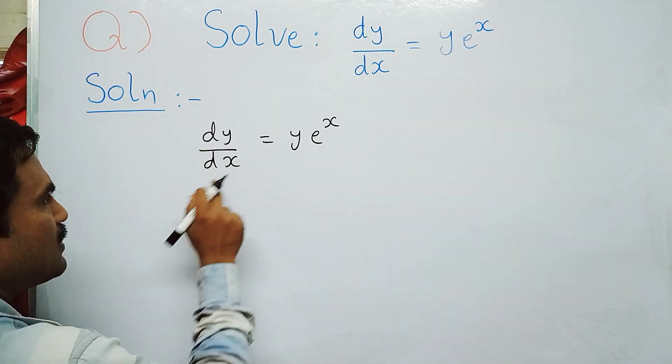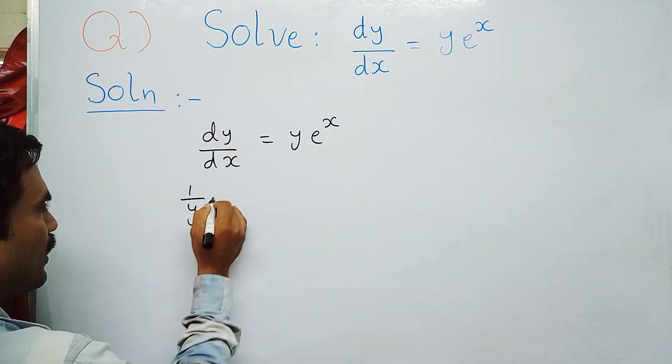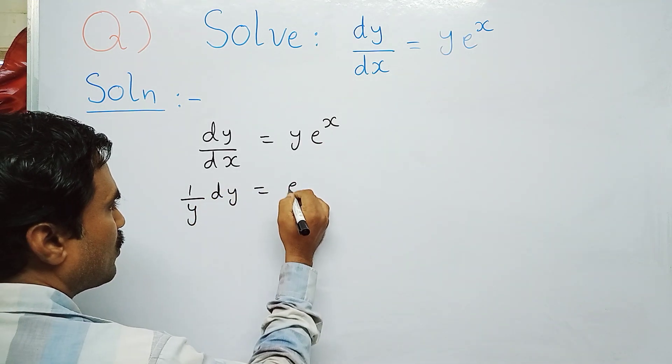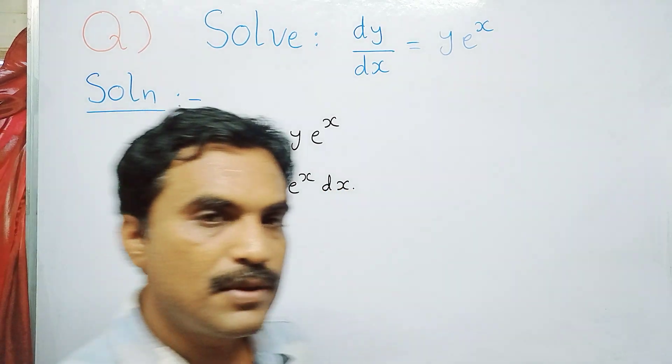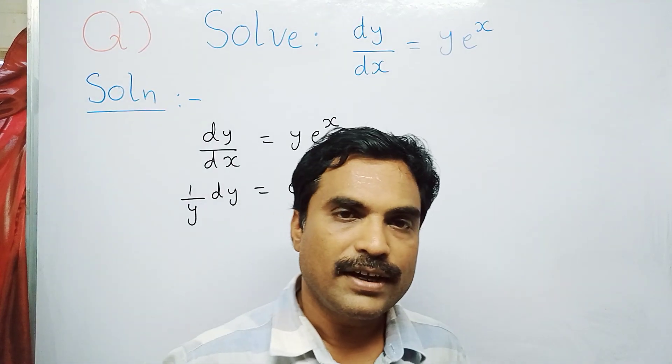First we separate: dy is there, so we take this y to this side. You can write this as (1/y)dy = e^x dx. We have used the variable separable method.